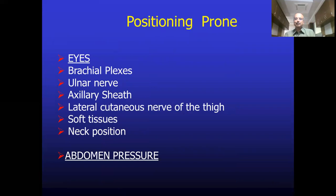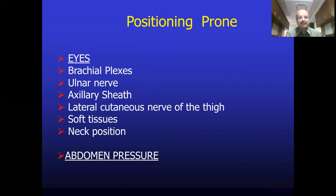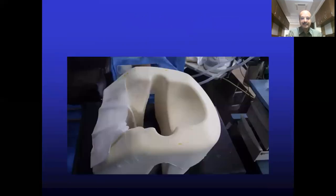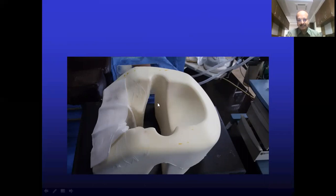The key point with the Relton Hall frame is to make sure the diaphragm moves freely when the patient is positioned, otherwise intra-abdominal pressure will be increased. Since all these surgeries are done in the prone position, when turning the patient from supine to prone after induction, make sure the eyes are free from direct pressure, which can cause optic neuropathy, and ensure the brachial plexus is protected. We use a specially designed headrest where the eyes sit in a defect with no direct pressure — a well-designed headrest for all prone surgeries.